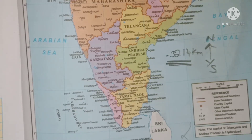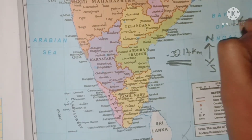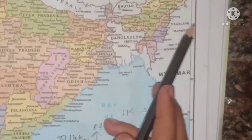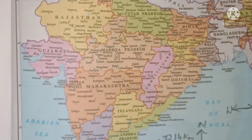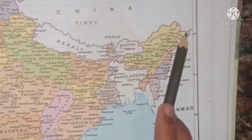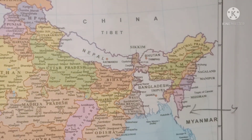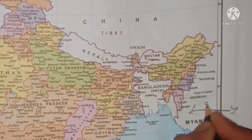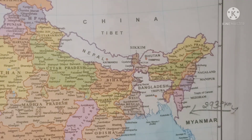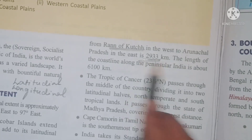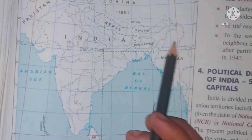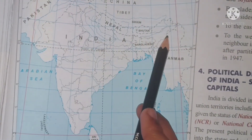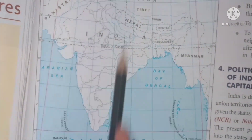Coming to the west-to-east extent, from the Rann of Kutch in the west to Arunachal Pradesh in the east, India extends 2,933 kilometers. So, from Rann of Kutch to Arunachal Pradesh it is 2,933 km, and from Kashmir to Kanyakumari it is 3,214 km.